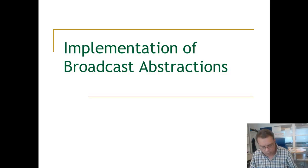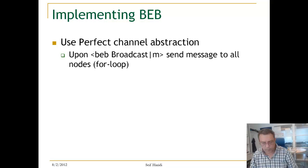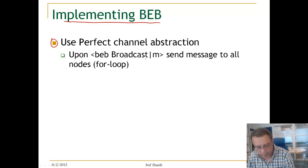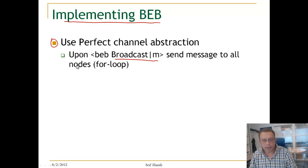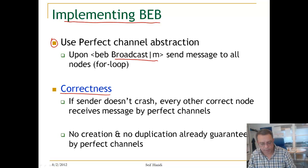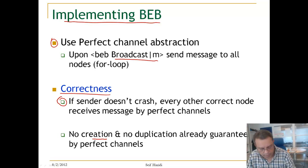Now we look at the implementation of broadcast abstraction. First, let us look at best-effort broadcast. This is quite easy to implement. We use a perfect channel abstraction, and whenever the best-effort broadcast gets a request to broadcast a message M, it sends the message to all nodes using a perfect link. If the sender does not crash, by the perfect link property, every other correct process will receive this message. Because the perfect link guarantees no creation and no duplication of messages, this property will also be satisfied by the best-effort broadcast.